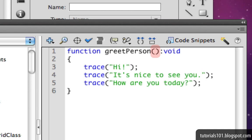We don't have any parameters, so this part is empty. And our function is not going to return anything, so I'll be using a return data type of void. Lastly, here's the function body made up of three trace statements.